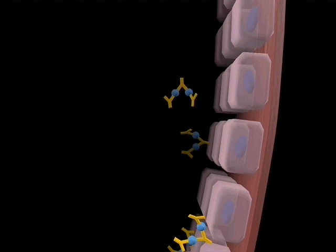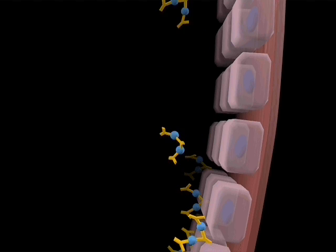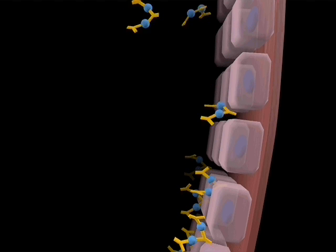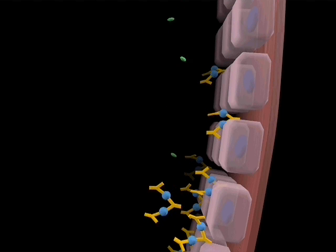Immune complexes circulating in the blood deposit on the endothelium. These complexes, consisting of autoantibodies bound to self-antigens, tend to deposit at sites of high pressure, filtration, or turbulence, particularly in the kidney.